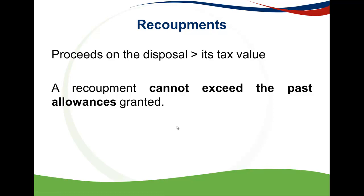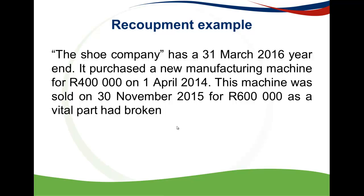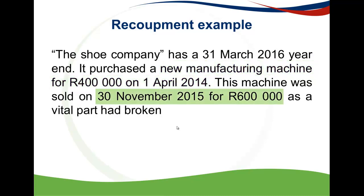This example is exactly the same as the previous one. You purchased the asset in the 2015 year of assessment — a new manufacturing machine for R400,000. It was sold in the 2016 year of assessment, on 30 November 2015, and it was sold for R600,000.